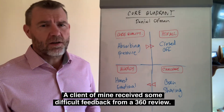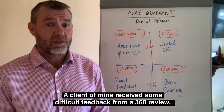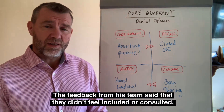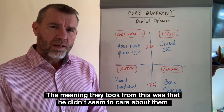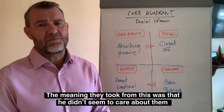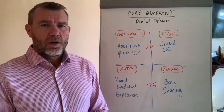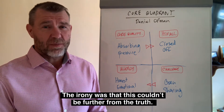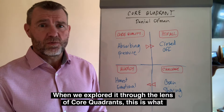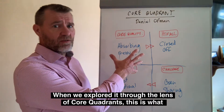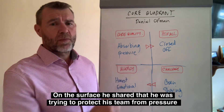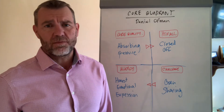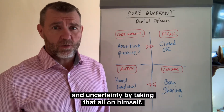Here's an example. A client of mine received some difficult feedback from a 360 review. The feedback from his team said they didn't feel included or consulted. The meaning they took from this was that he didn't seem to care about them or what they might have to contribute. The irony was that that couldn't have been further from the truth — he cares a great deal. On the surface he said that he was trying to protect his team from pressure and uncertainty by taking that all on himself.